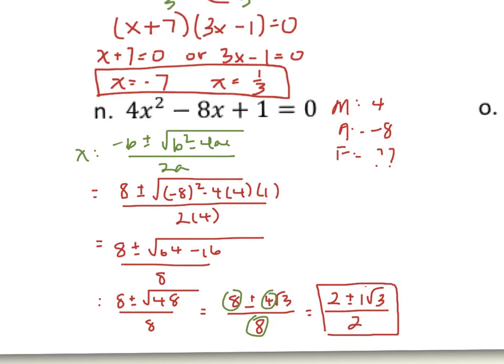So the answer is (2 ± √3) / 2. Don't try to reduce further — a lot of students want to cancel, but those don't cancel. You can only cancel if all three terms share a common factor, which I did see here. But otherwise, that would be the final answer. That's an example of where MAF does not work and you have to use the quadratic formula.